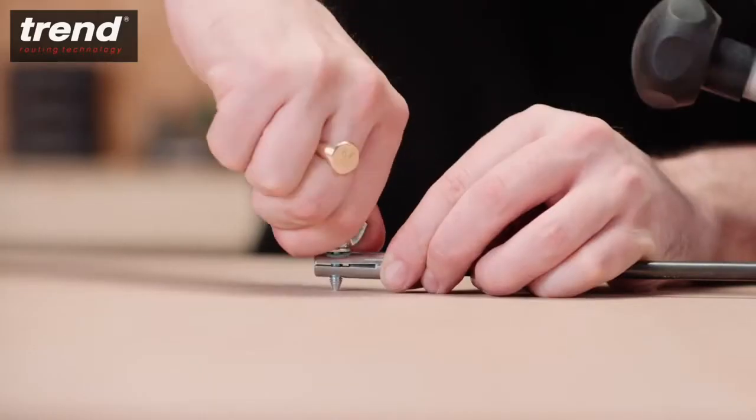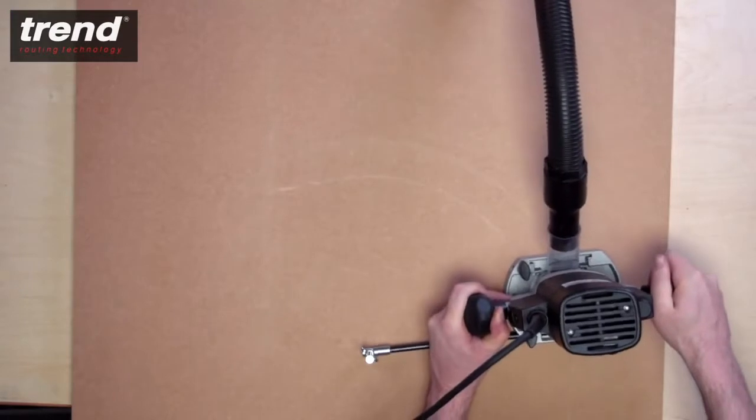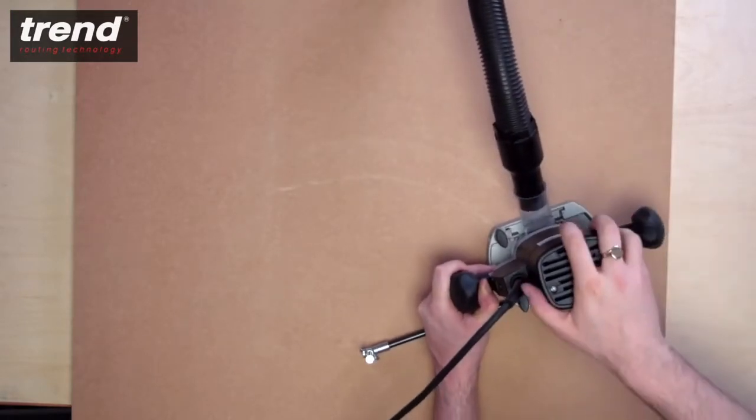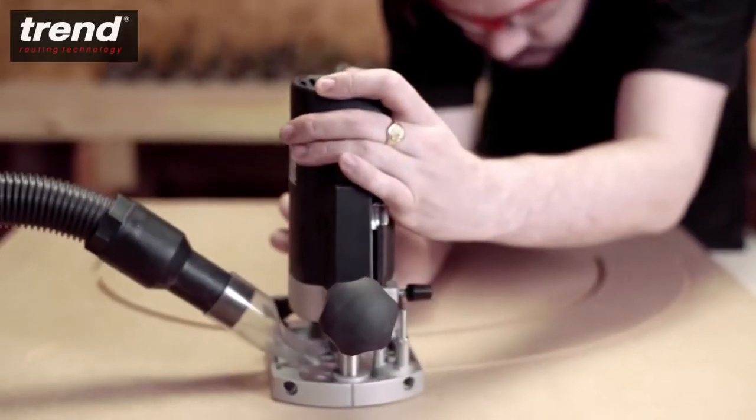A beam trammel attachment is included for use when cutting arcs or circles. Here it is being used to cut a curved template for a mirror.